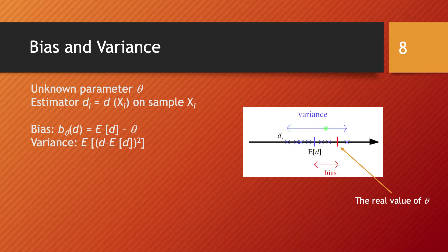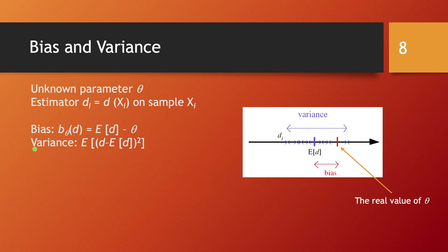In general an estimator may have some bias. The other factor we consider is how spread out these estimations of theta are, and that's where we talk about the variance of our estimator. The bias of estimator D for parameter theta is the expected value of the estimator minus theta. The variance is, as usual since the estimator is a random variable, the expected value of D minus the expected value of D, squared — the usual way variance is computed.